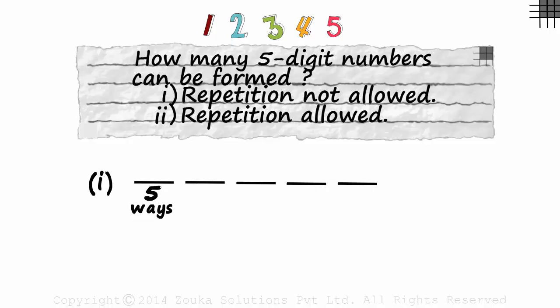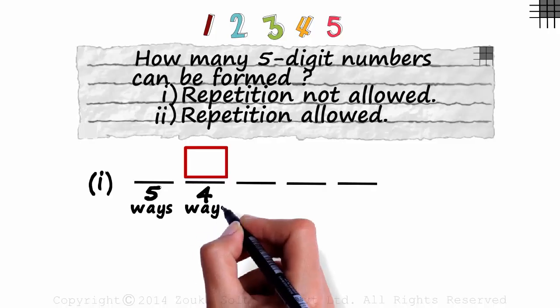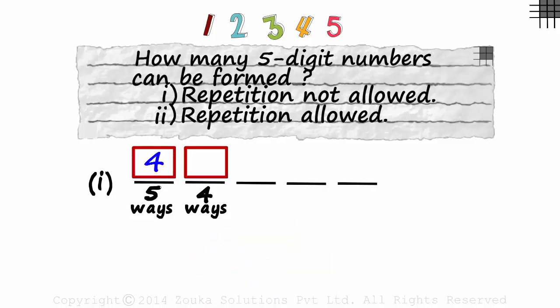Now assume we have filled up the first slot with one of these digits. With the first slot being filled, in how many ways can the second slot be filled? As one digit is used here, four remain. The second slot can be filled in four ways. If the first slot is filled with a four, then the second one can be filled with one, two, three, or five. If the first slot is filled with a two, then the second one can be filled with a one, three, four, or a five.